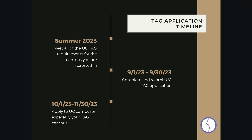Let's talk about the TAG application timeline. In the summer of 2023 you should be ensuring that you're going to meet the requirements for the school that you would like to tag with. Between September 1st and September 30th you will complete and submit the TAG application. Technically you could start completing the application before September, but you won't be able to submit until September 1st through the 30th.